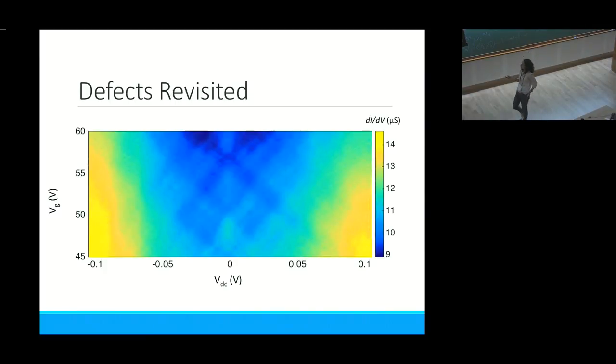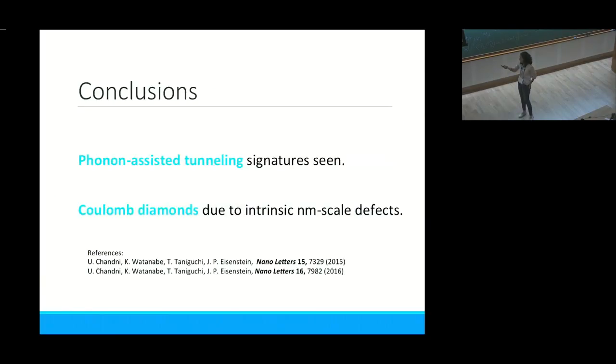The two main conclusions are that we have phonon-assisted tunneling in graphene and metal structures, and Coulomb diamonds are seen which are possibly due to intrinsic defect states in the boron nitride devices. The work can be found in these two papers. Thank you.